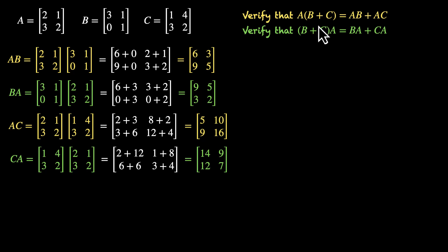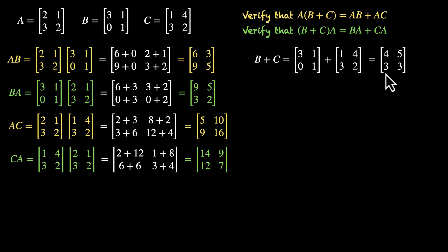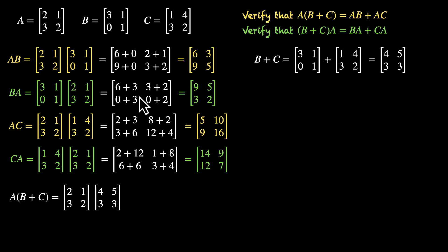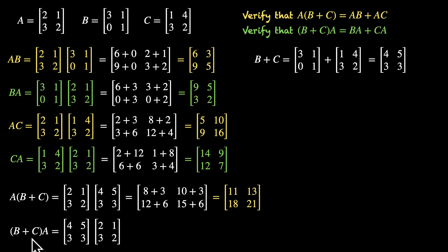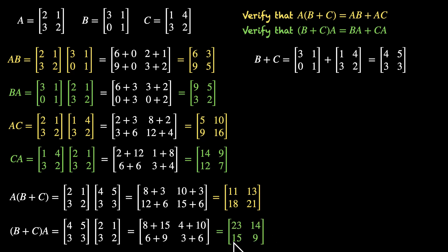Now let's find the left-hand side. We need B + C first: [3, 1, 0, 1] + [1, 4, 3, 2] = [4, 5, 3, 3]. Now A(B + C): 2×4 + 1×3 = 11, 2×5 + 1×3 = 13, 3×4 + 2×3 = 18, 3×5 + 2×3 = 21. So A(B + C) = [11, 13, 18, 21]. And (B + C)A: 4×2 + 5×3 = 23, 4×1 + 5×2 = 14, 3×2 + 3×3 = 15, 3×1 + 3×2 = 9. So (B + C)A = [23, 14, 15, 9].